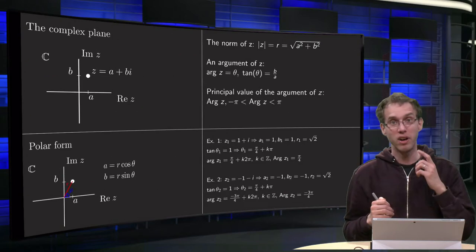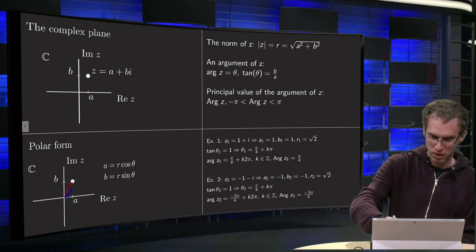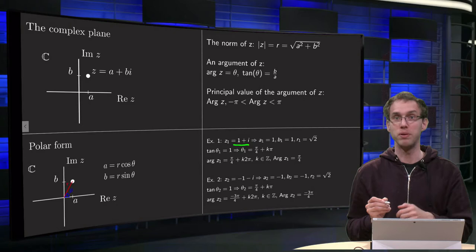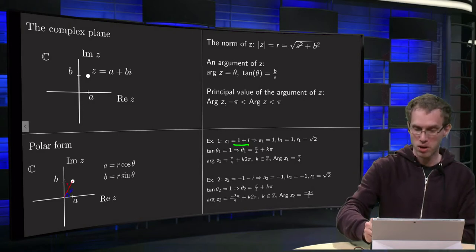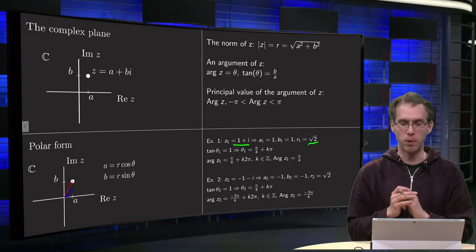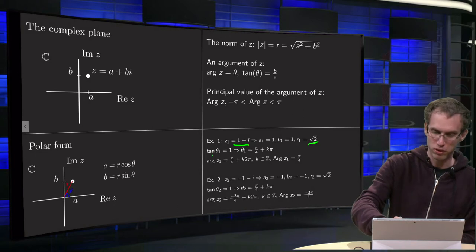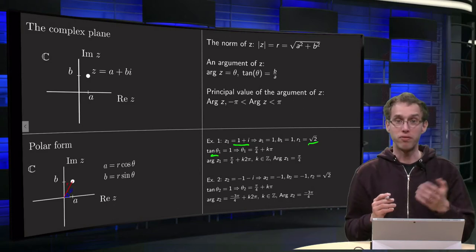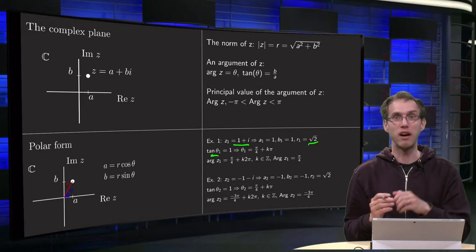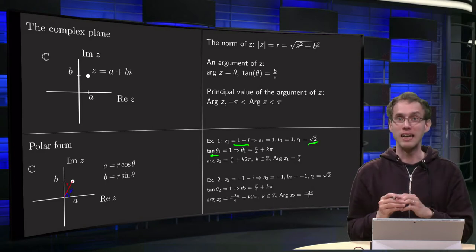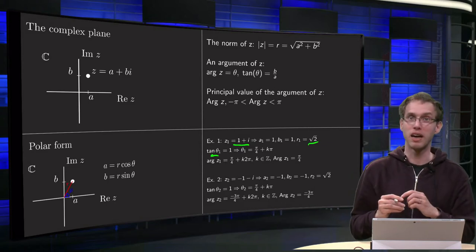Let's do an example, because we have to be careful on one more point. First we take z1 = 1 + i, so A equals 1 and B equals 1, giving the square root of 1 squared plus 1 squared equals the square root of 2. So r1 equals the square root of 2 — no problem. Now we have to be a bit careful: the tangent of theta1 equals 1 over 1 equals 1. If you plug that into your calculator you get theta1 equals pi over 4, and in this case that happens to be the correct one.